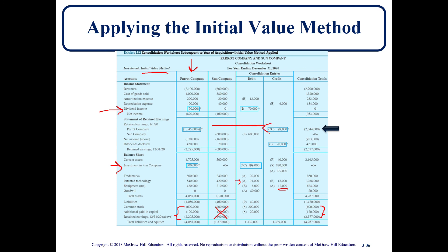We now have a new Entry C, which handles the retained earnings adjustment. The parent's retained earnings is understated under the Initial Value Method compared to the Equity Method, so we need to increase it by crediting $199,000 — the difference calculated in the previous slide. Whether we use the Equity Method, Initial Value Method, or Partial Equity Method, the beginning retained earnings should tie out across all three methods. This concludes our presentation on the Initial Value Method.